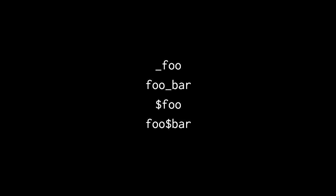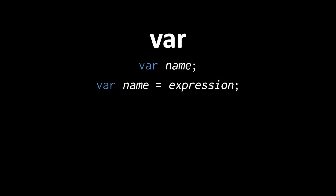In Pidgin we implicitly created variables by assigning to a name, but in JavaScript we have to explicitly declare the existence of a variable using a var statement, which starts with the reserved word var, followed by the name of the variable being declared, and then optionally with an assignment of some initial value. So here for example we're declaring a variable named monkey, and then we're declaring a variable named zebra with the initial value 3.